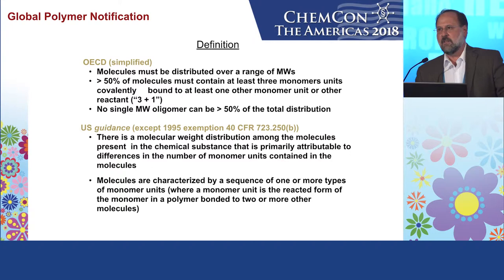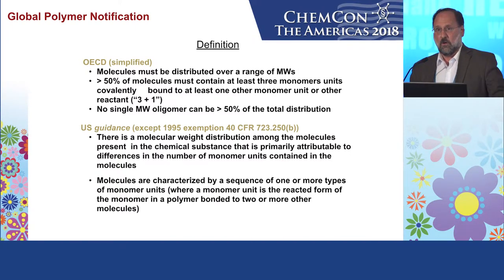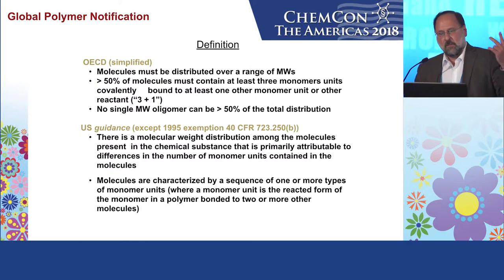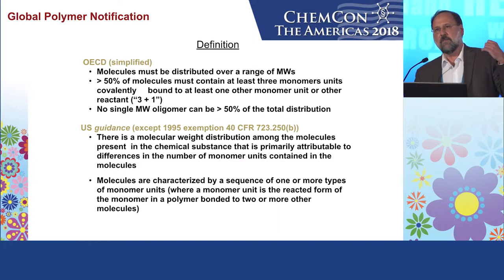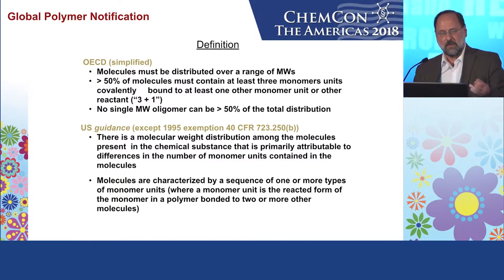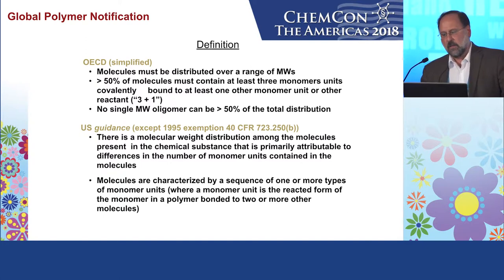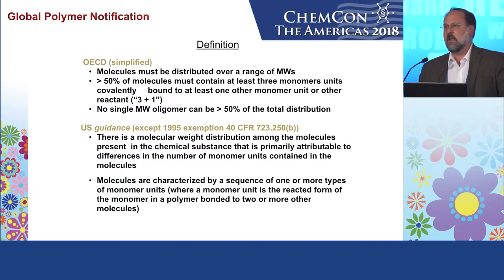Here's the definition of a polymer from the OECD — it's long, so let's break it down. Three components: molecules must be distributed over a range of molecular weights; greater than 50% must contain at least three monomers bound to at least one other monomer or other reactant — I call that the three-plus-one rule; and no single molecular weight oligomer can be greater than 50% of the total distribution. If you meet all three of these, you're a polymer.